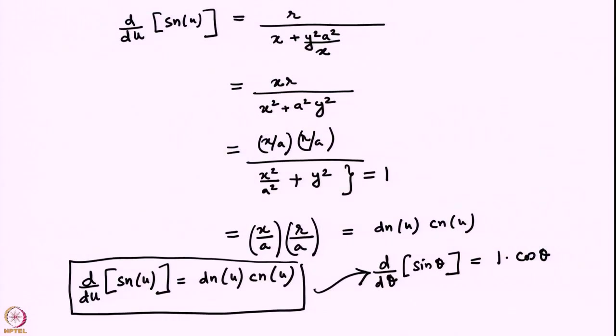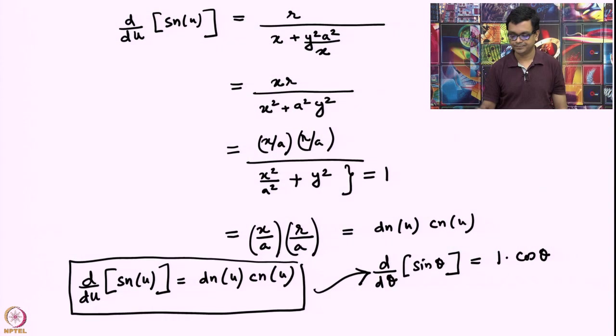We were looking at elliptic functions and looked at some identities concerning elliptic functions. We learned how to take the derivative of the first elliptic function: d/du of SN(u), which generalizes the circular function identity d/dθ of sin θ = cos θ. Now let us do one more derivative and find out how to take the derivative of CN(u).